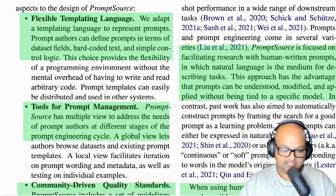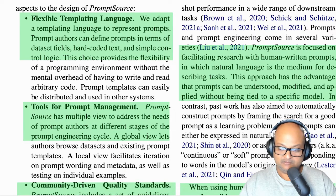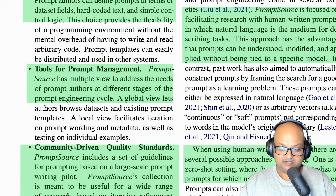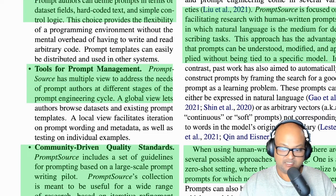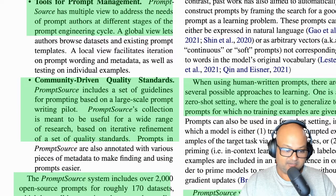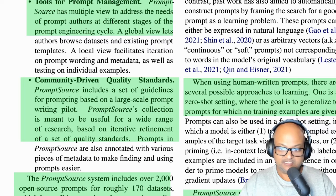The main design principles that guided the system are: first, a flexible templating language — these prompts usually have some overall structure with fill-in-the-blanks for more specific things, so a templating language is a good fit. Second, once you have that basic way to construct prompts, you need tooling around managing them — how to view, edit, and manage a large number of them. And finally, you need some way to judge the quality of prompts, which they address with community-driven quality standards built into PromptSource itself.